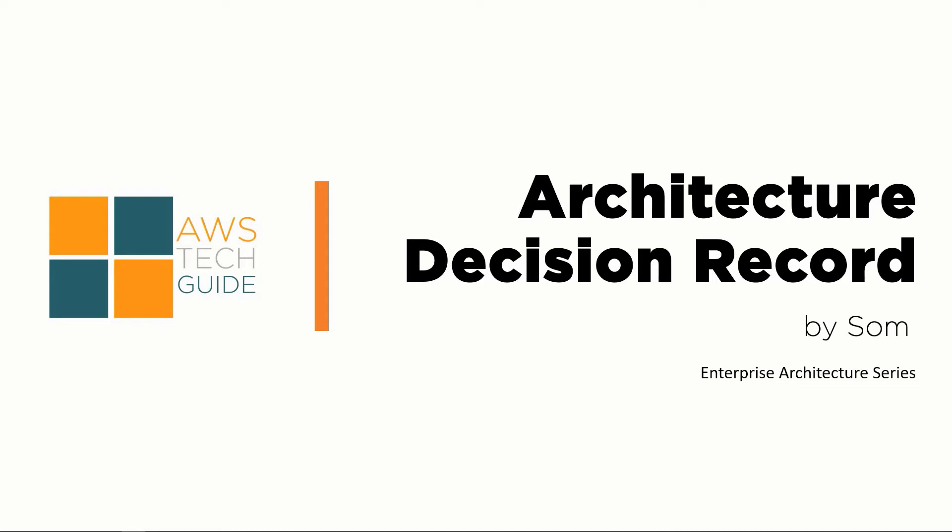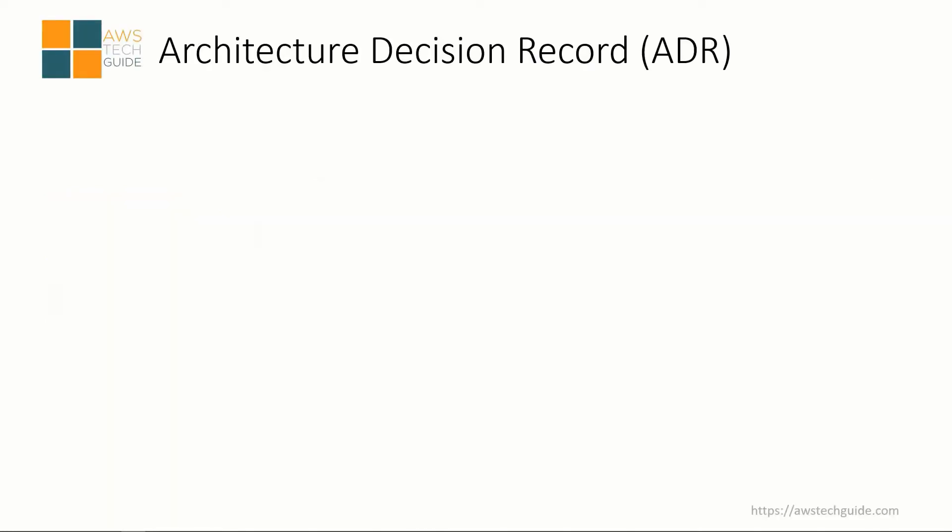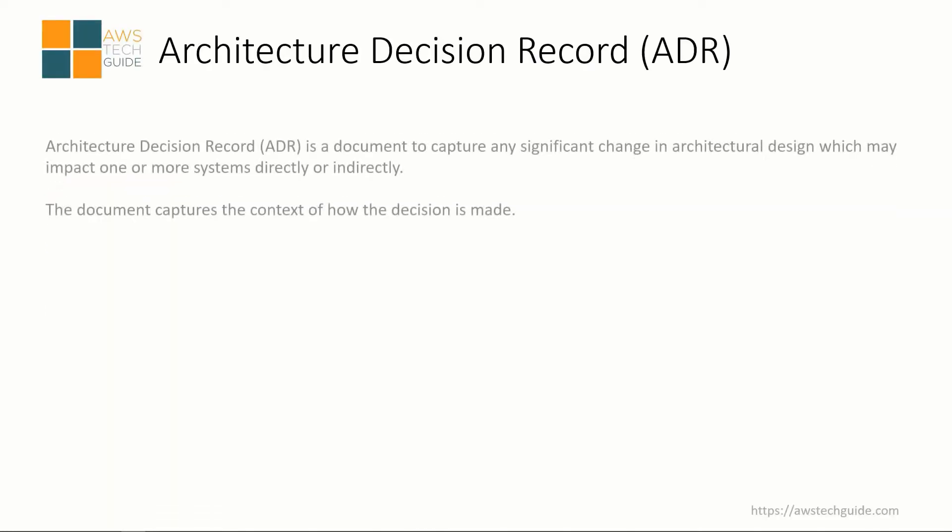Hello, welcome to AWS Tech Guide session. In this session I will be talking about Architecture Decision Record, or ADR. ADR is an architecture document. I'll be covering what is ADR, why we need to write ADR, when should we write ADR, and the best practices in this session. So let's proceed — first, what is ADR?